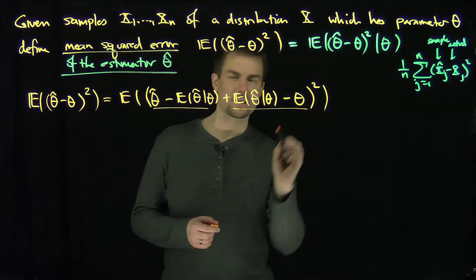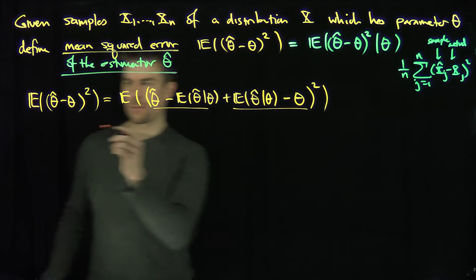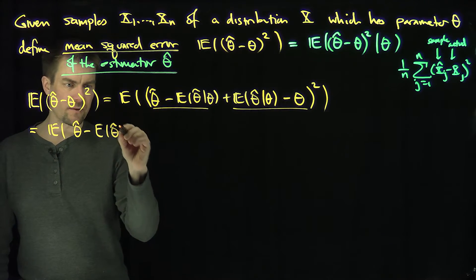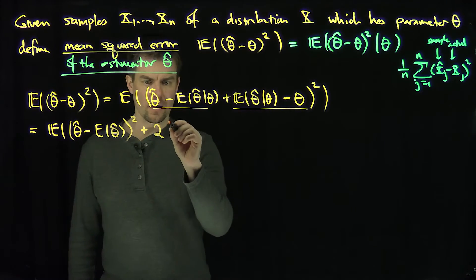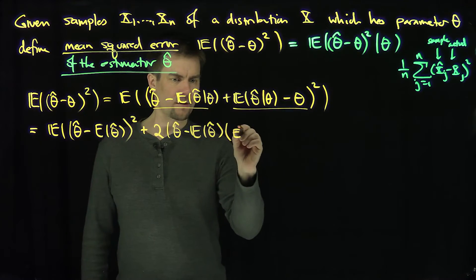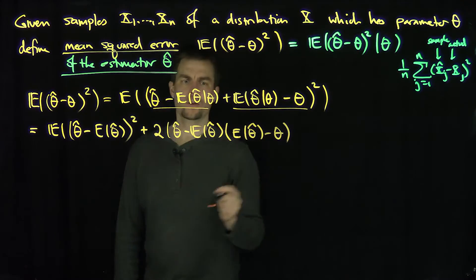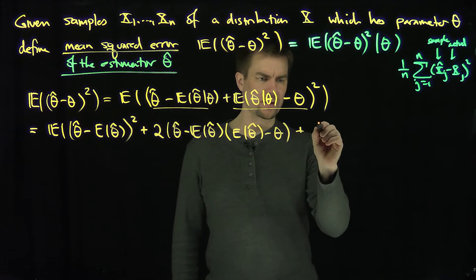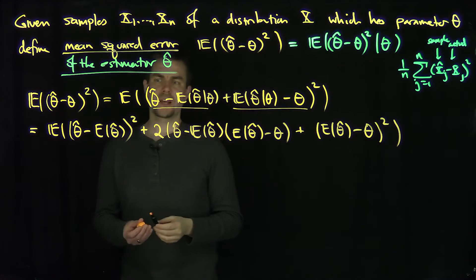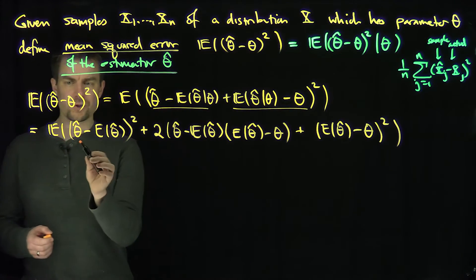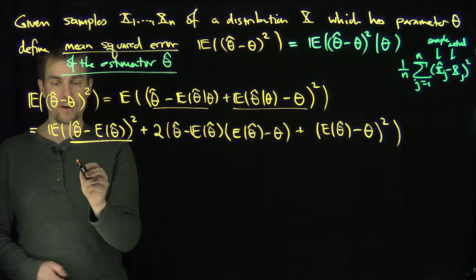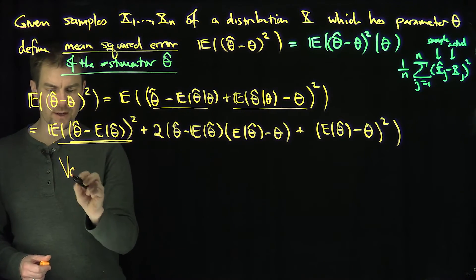I'm going to group these two terms together. When I square something, I'll call this my a and that my b, giving three terms. The expected value of a squared is theta-hat minus expected value of theta-hat, quantity squared — that first term gives you exactly the variance of the estimator theta-hat.